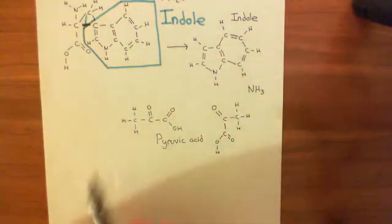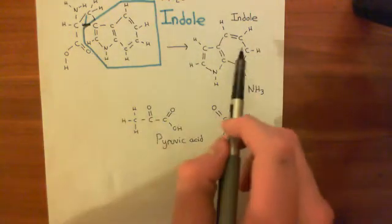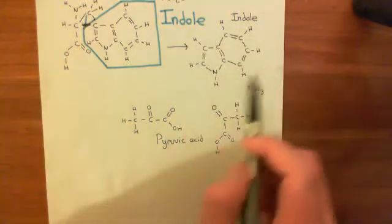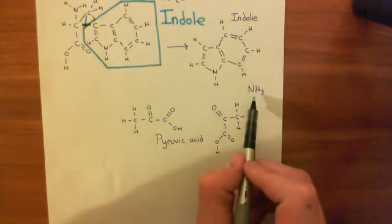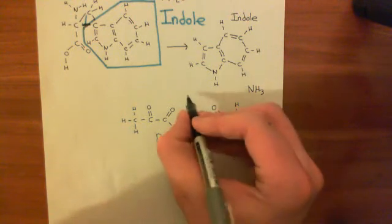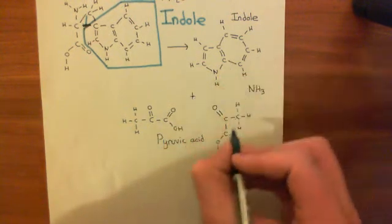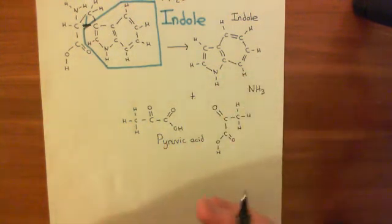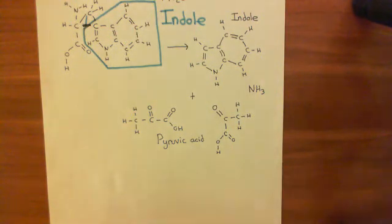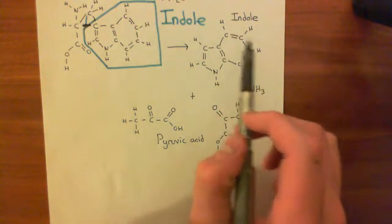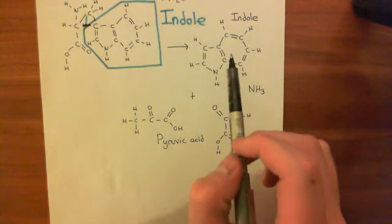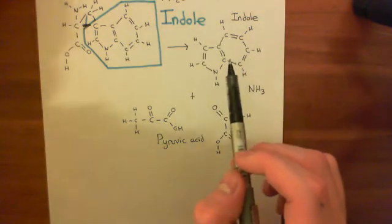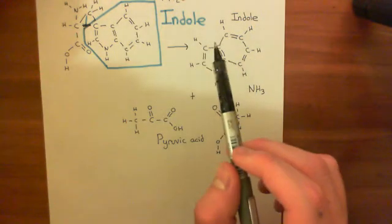Basically, that's what this tryptophanase does. It splits tryptophan into an indole ring along with ammonia and pyruvic acid. You get these free products from this breakdown of tryptophan. And in the next video, we'll see how this indole is really important in signaling between the different bacteria in this E. coli culture.